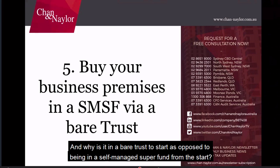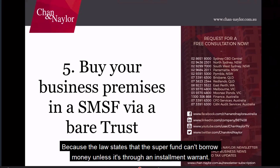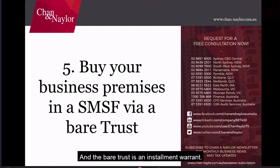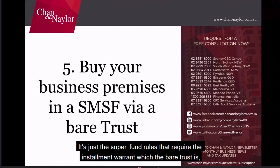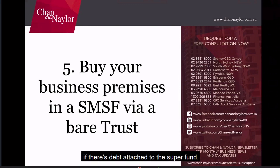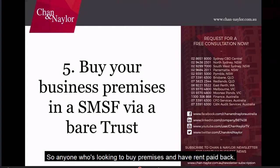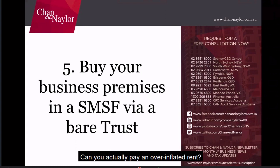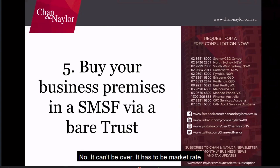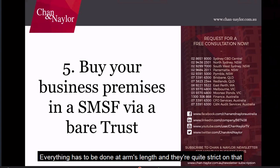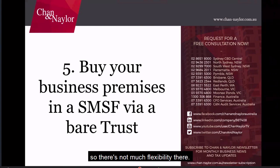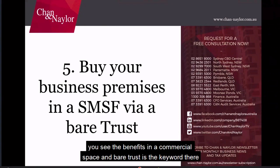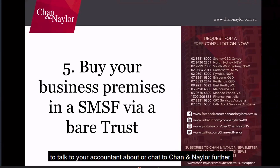The super fund can't borrow money unless it's through an installment warrant, and the bare trust is that installment warrant — it's required by super fund rules when there's debt attached. For anyone looking to buy premises and have rent paid back, can you pay an over-inflated rent? No — it must be at market rate. Everything has to be done at arm's length, and they're quite strict on that. So for anyone considering a self-managed super fund, the bare trust is a key term to discuss with your accountant.